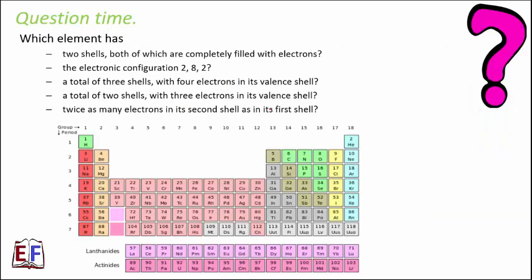Which element has two shells, both of which are completely filled with electrons? Many group 18 elements have all filled electrons, but here we are looking for an element with only two shells — K and L — both filled. Two such elements could be helium or neon. For neon, the configuration is 2, 8 — both shells are filled.